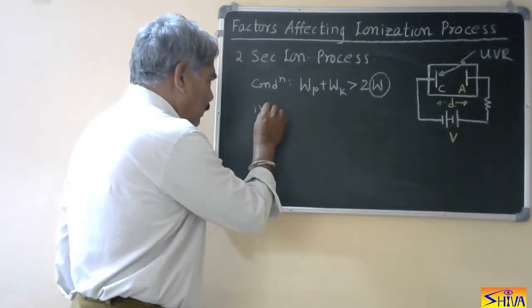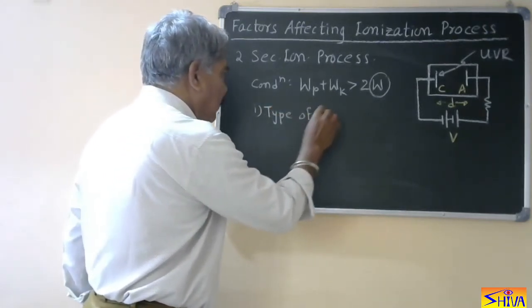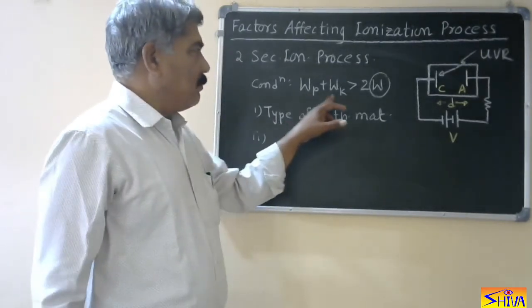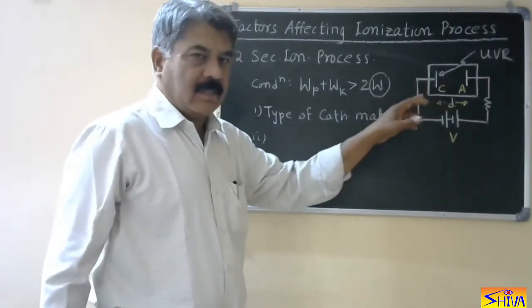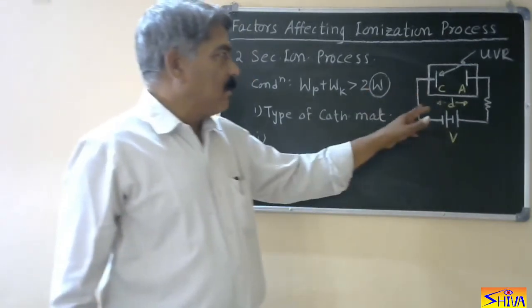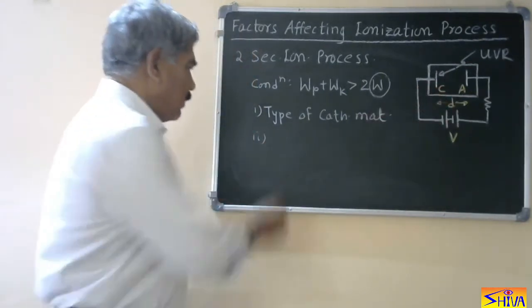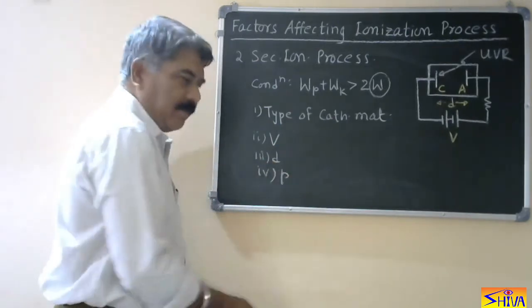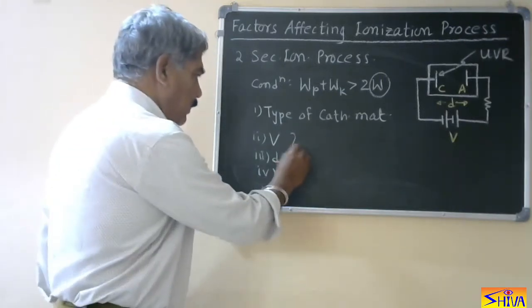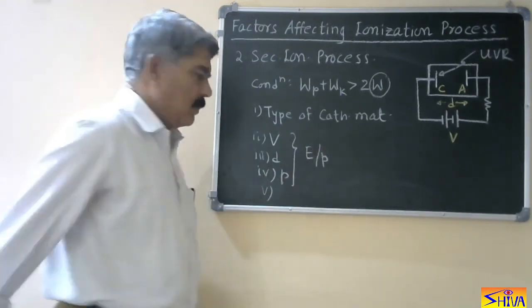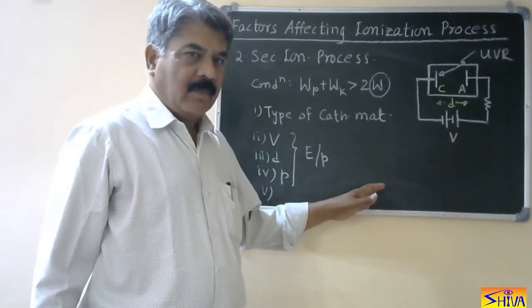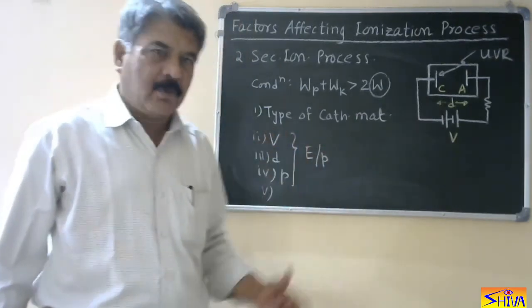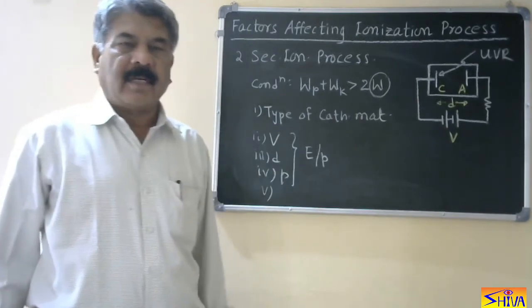The second factor is the kinetic and potential energy of the positive ions. So all the factors responsible for the primary ionization process also come into play here: voltage V, distance D, pressure, and nature of the gas — combined as E/P. All parameters which affect the primary ionization process also affect the secondary ionization process, but in addition to those, the type of cathode material also affects the secondary ionization process.